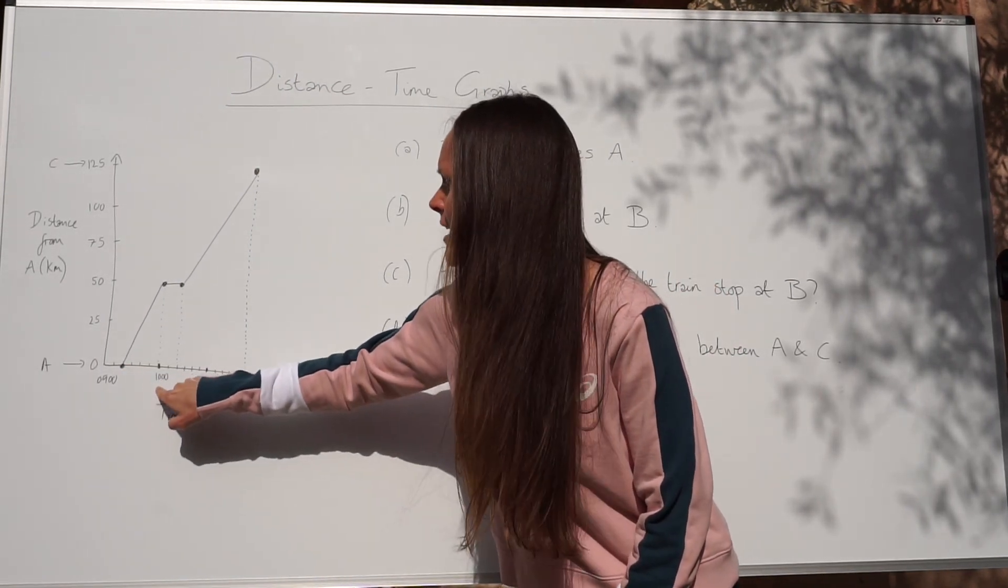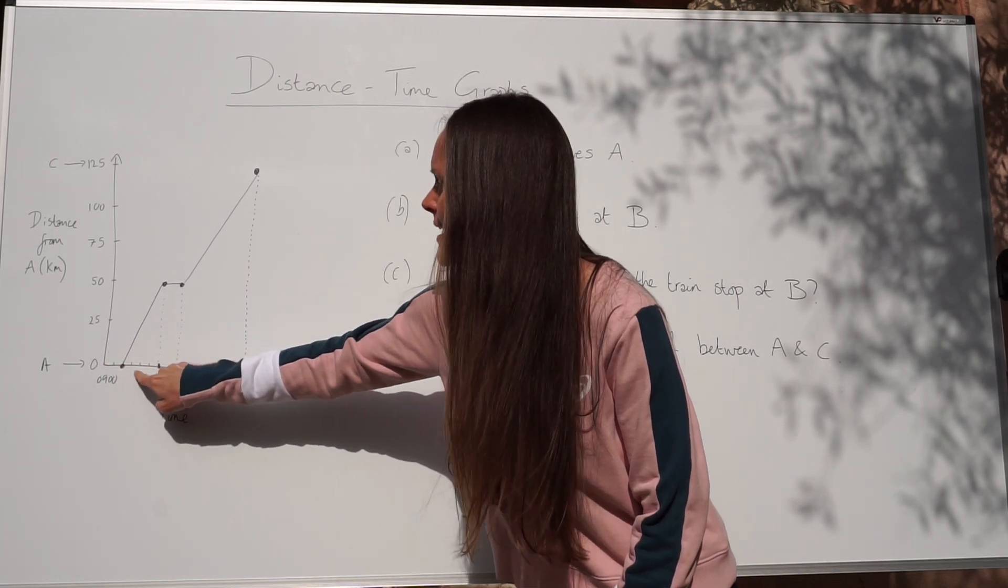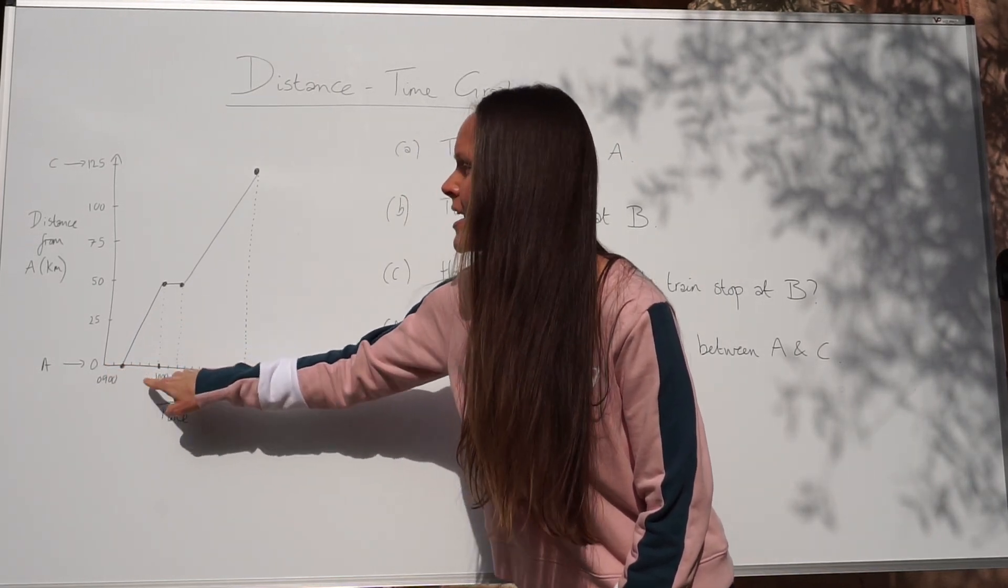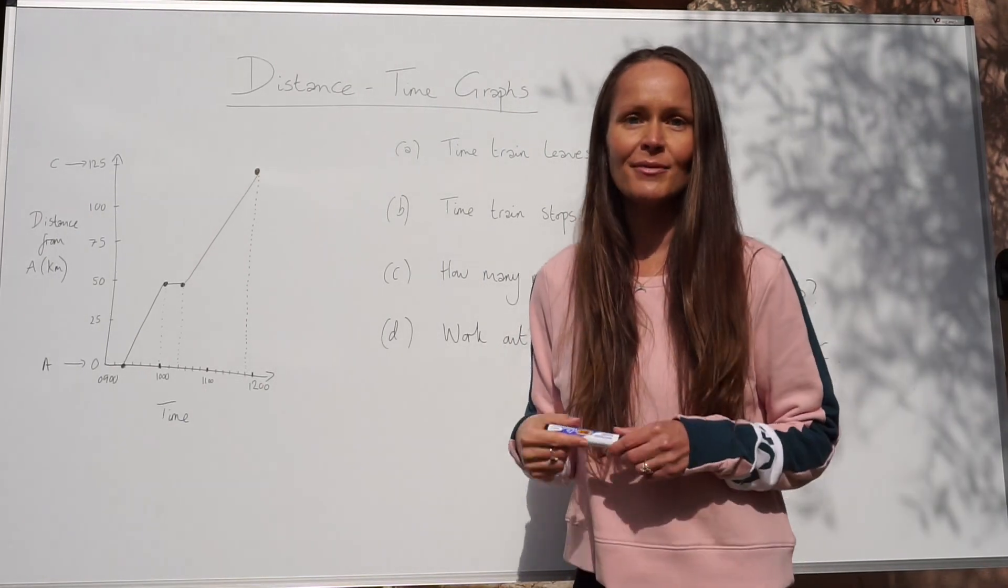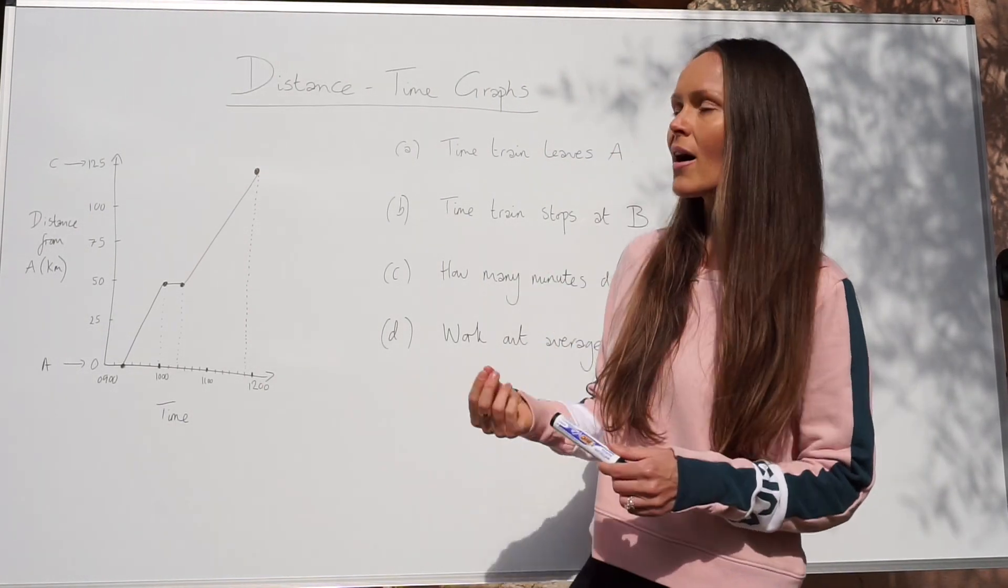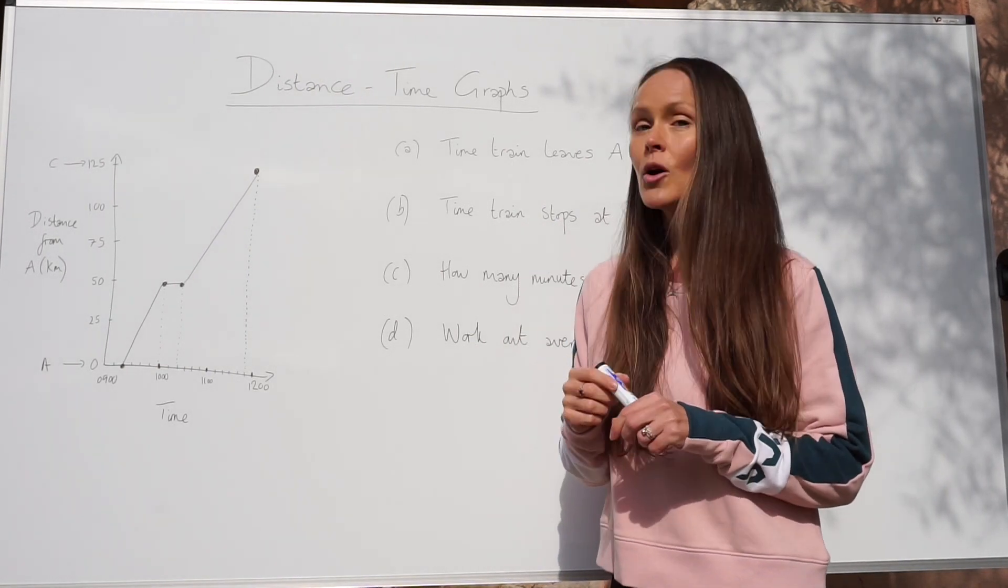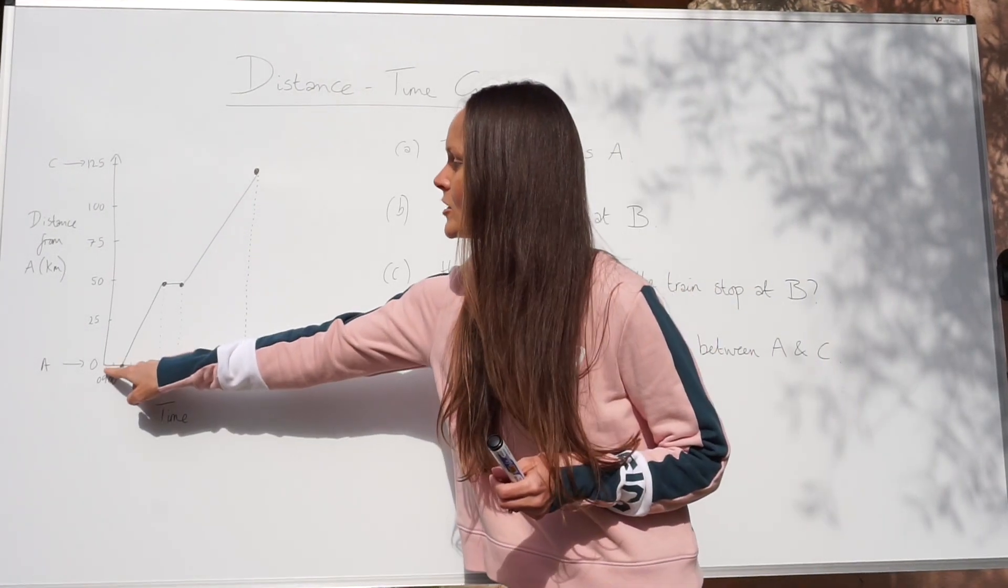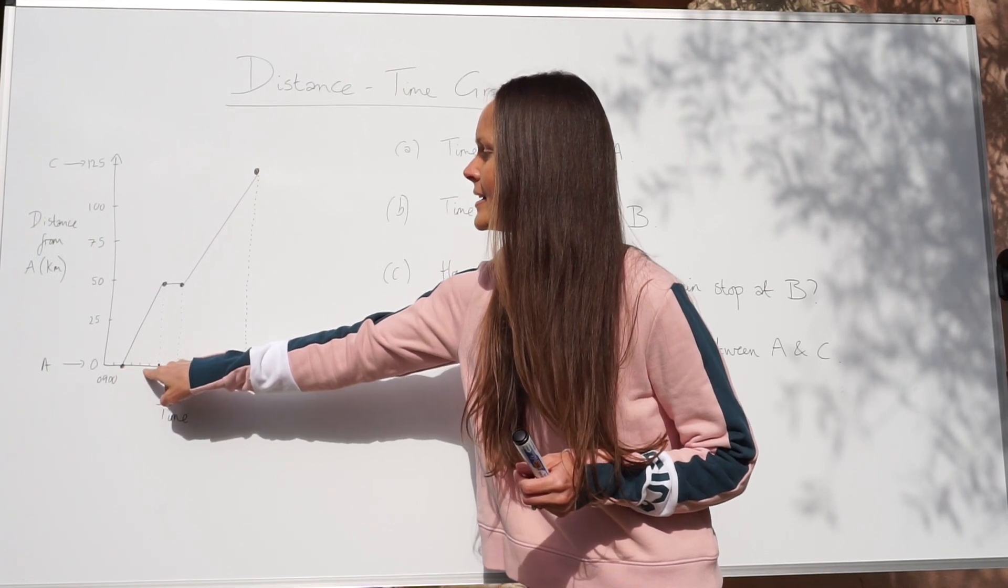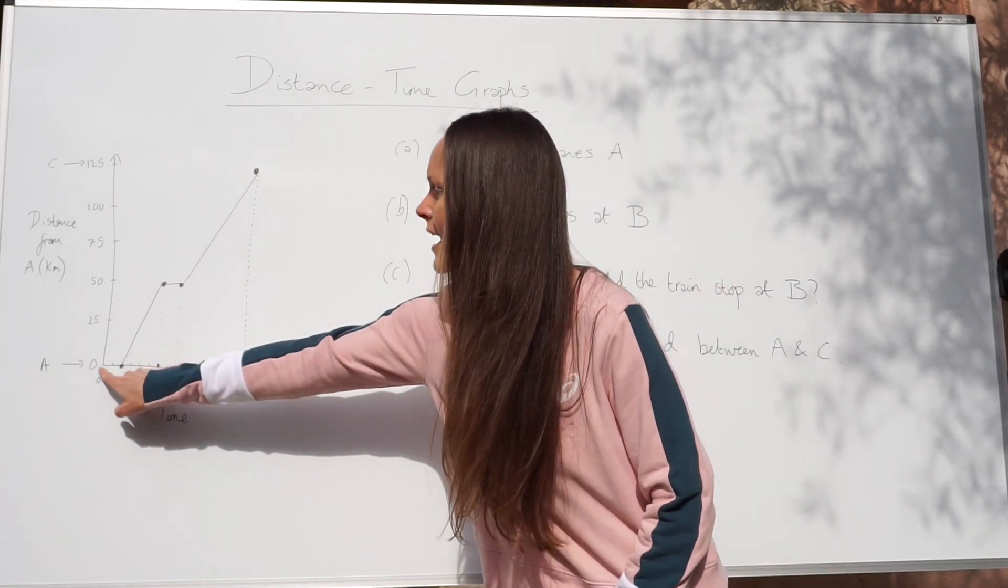this is 10 o'clock and there are 6 little squares in between that hour. So in 1 hour you have 60 minutes. If we divide those 60 minutes by 6 because there are 6 little squares, we get 10 which means each little square along here is equal to 10 minutes.